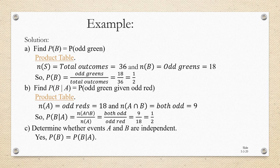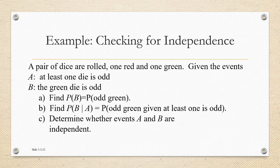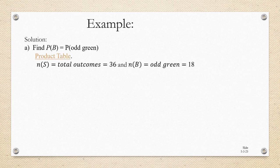Knowledge of an odd red die does not impact the probability of an odd green die. Let's do one more using the same definition of independent events. We're going to change the scenario slightly: event A is now the event that at least one die is odd — it could be the red die, the green die, or both. Event B is still the event that the green die is odd. We go through the three-step process. The probability of an odd green is still 18 out of 36 total outcomes, which is one half.